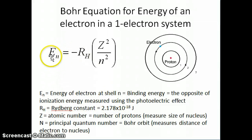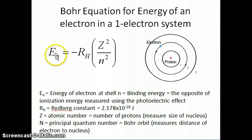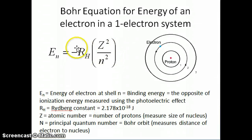This is also the energy of the electron at a particular principal quantum number. So if I was talking about the n equals 1 shell or orbitals in that shell, I would talk about the energy of the electron in that particular shell. E sub n is equal to negative R_H — and remember R_H is the Rydberg constant, which has this value: 2.178 times 10 to the minus 18 joules — multiplied by z squared over n squared.